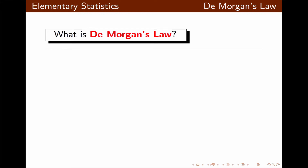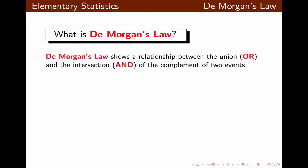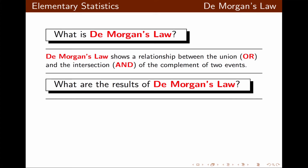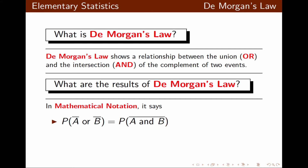DeMorgan's Law shows a relationship between the union or intersection and the complement of two events. Here are the results of DeMorgan's Law. Using mathematical notation for events A and B and the complements of events A and B, DeMorgan's Law says the probability of not A or not B is equal to the probability of not (A and B). It also says the probability of not A and not B is the same as the probability of not (A or B).